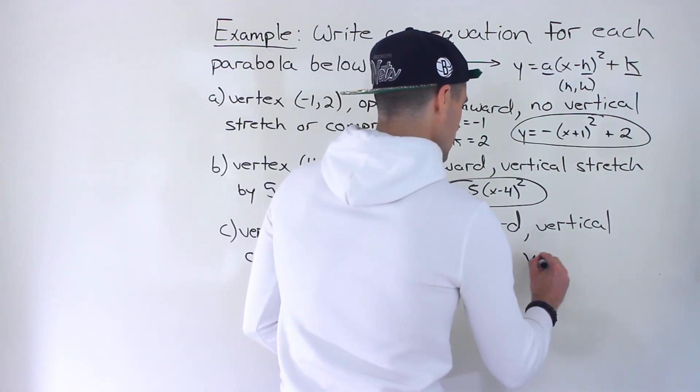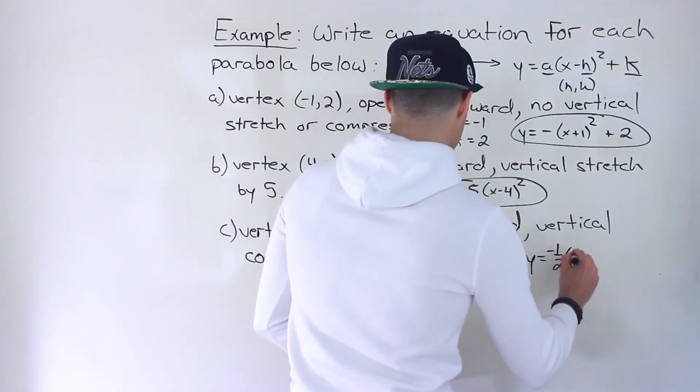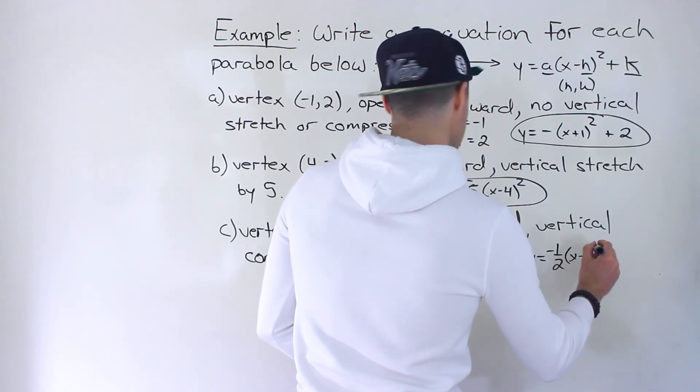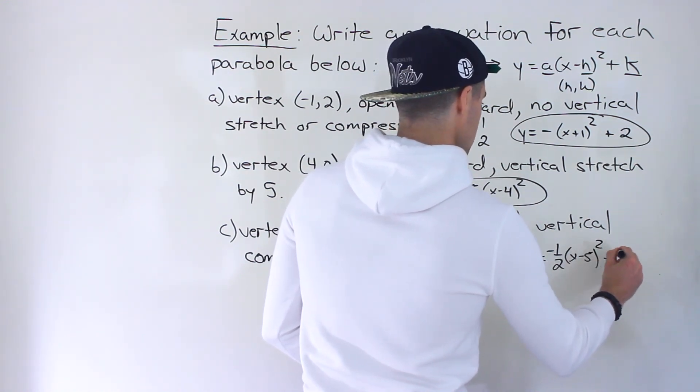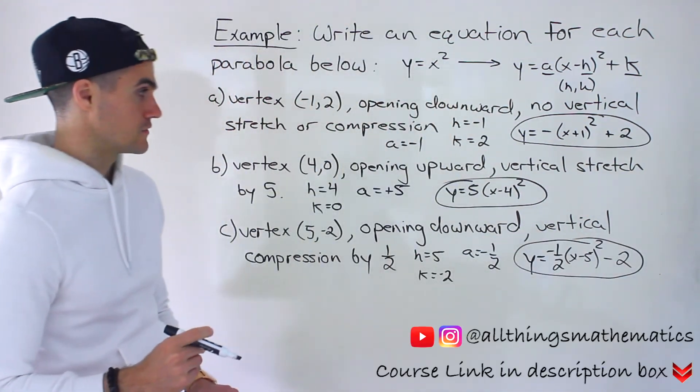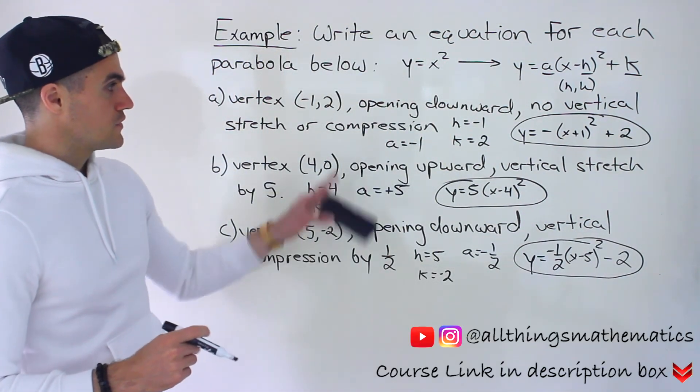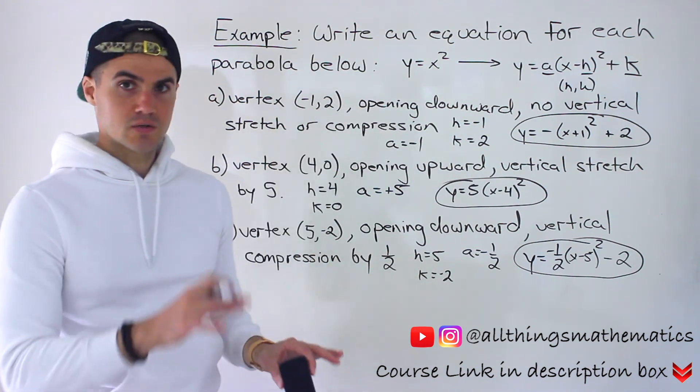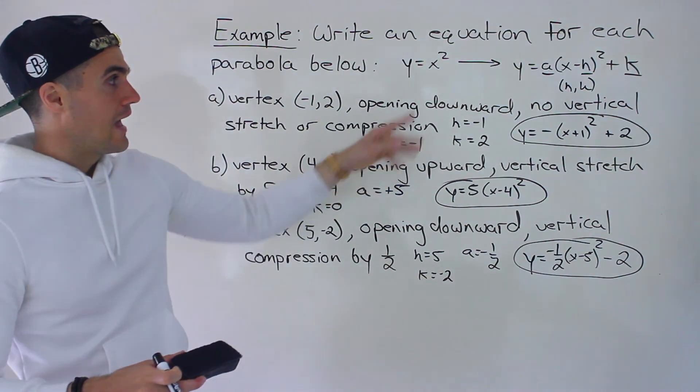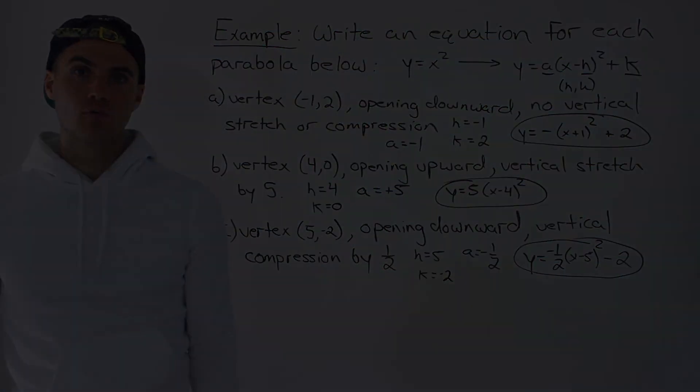So we end up with y equals negative one over two, x minus five squared minus two. The K value of negative two. So if you get something like this, just go through each of those characteristics separately, just get your H, K, and A value, and then just plug it into that general format.